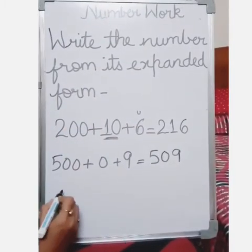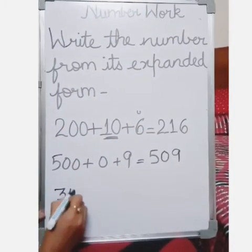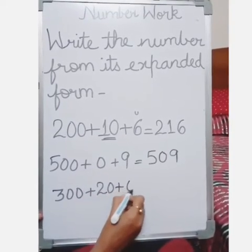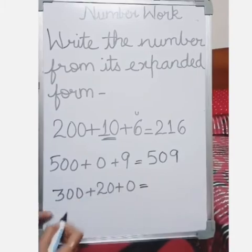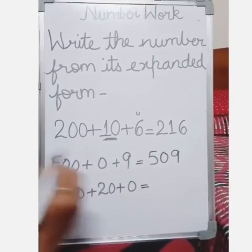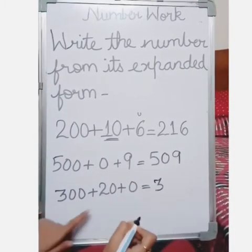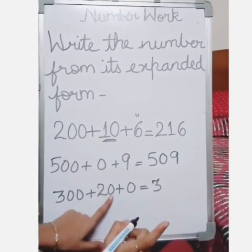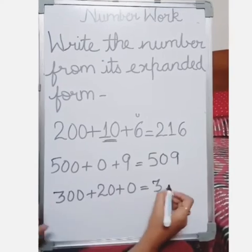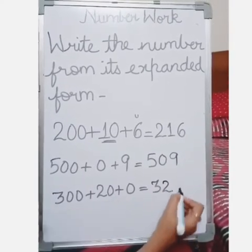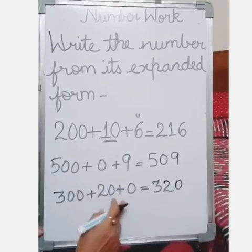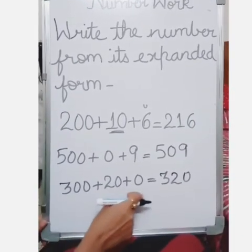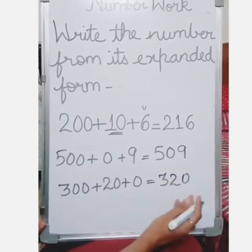Next example: 300 plus 20 plus 0. How many hundreds are there? 3, so you write 3. How many tens are there? 20 — that means 2 tens — so you write 2. And units is 0. So the number is 320. From the expanded form 300 plus 20 plus 0, the number is 320.